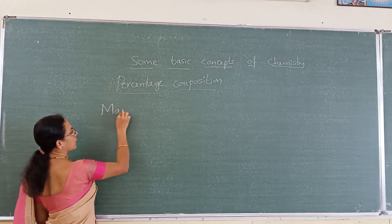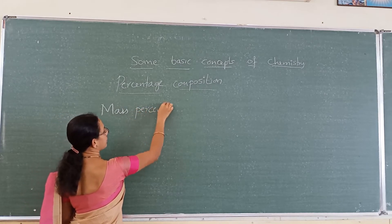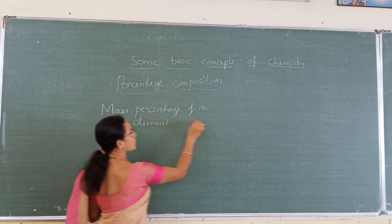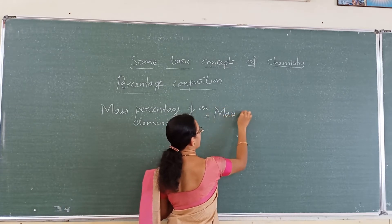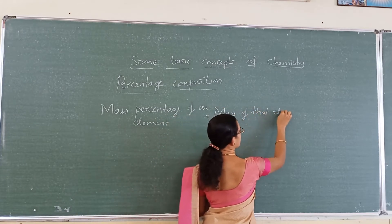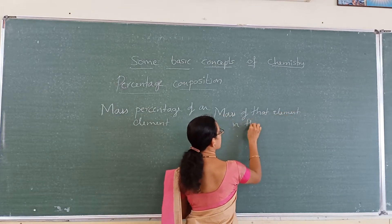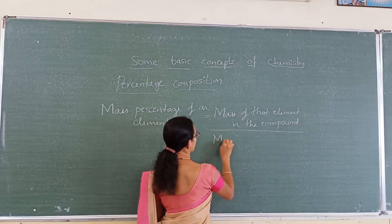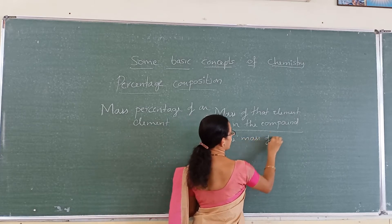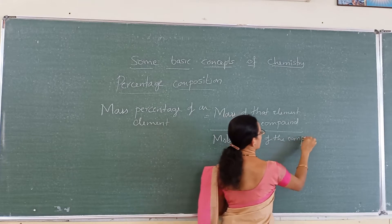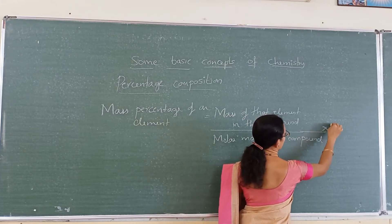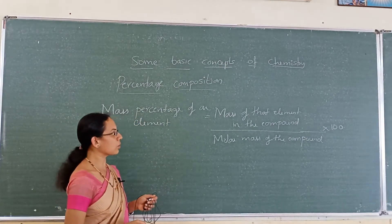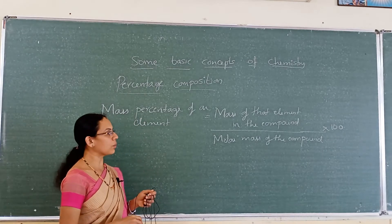The mass percentage of an element is equal to the mass of that element in the compound divided by the molar mass of the compound, multiplied by 100. This is the formula to calculate the mass percentage: mass of that element in the compound divided by molar mass of the compound into 100.